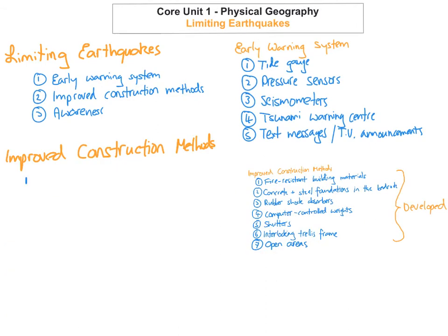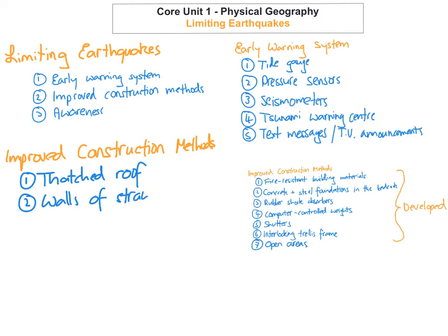In developing countries, the first thing they can do is have an attached roof — it's very lightweight, so if there's an earthquake and it falls it won't injure the people inside. Walls can also be made of straw and mud, so if there's a bad earthquake this won't seriously damage anybody inside the house.